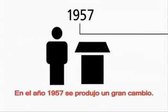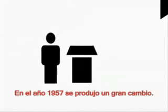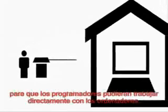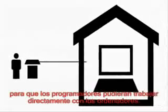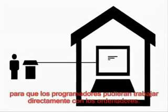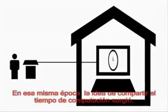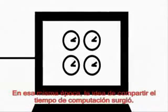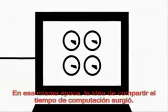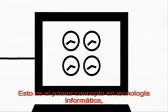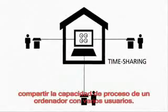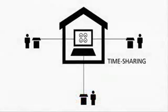The year 1957 marked a big change. A remote connection had to be installed so that the developers could work directly on the computers. At the same time, the idea of time sharing came up. This is the first concept in computer technology to share the processing power of one computer with multiple users.